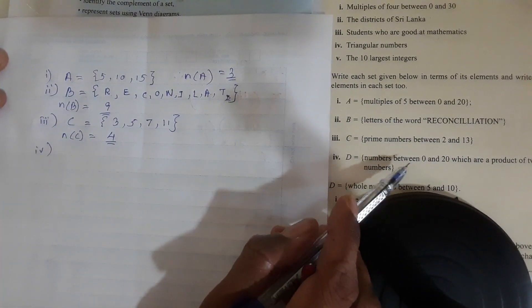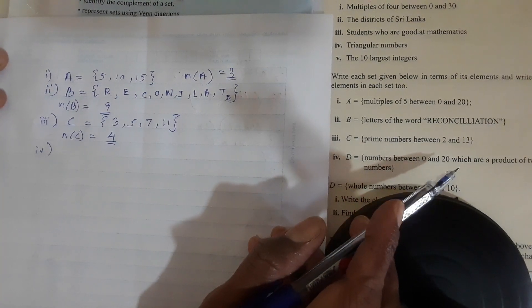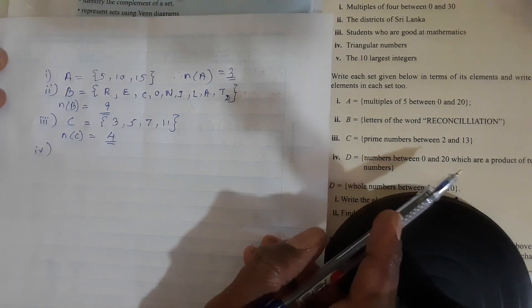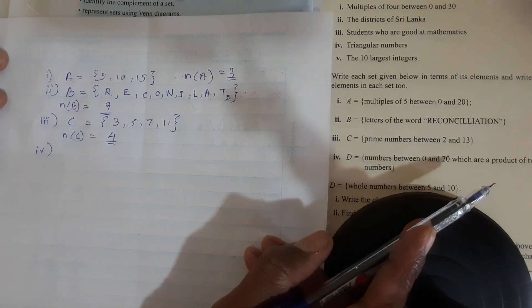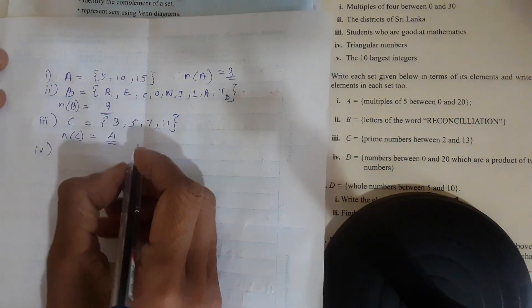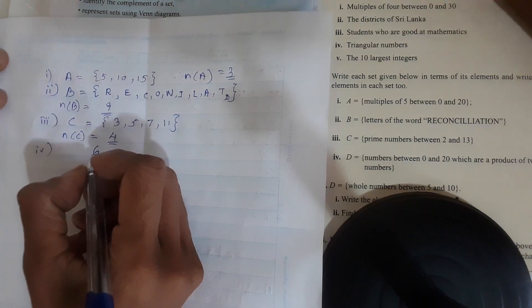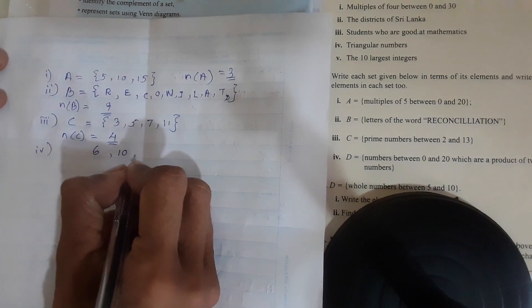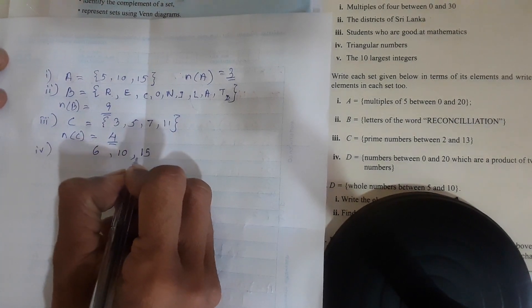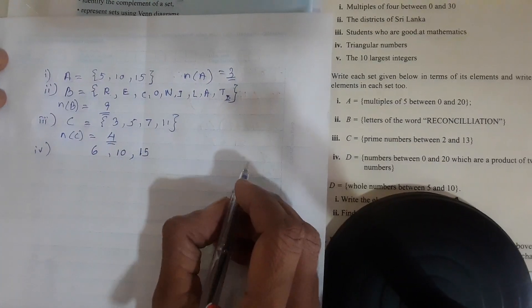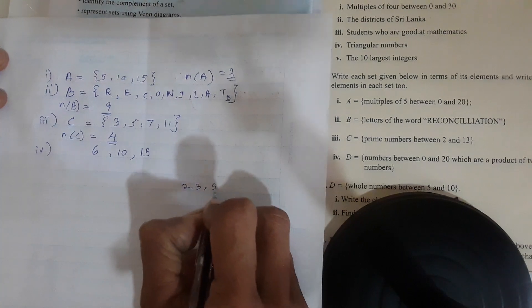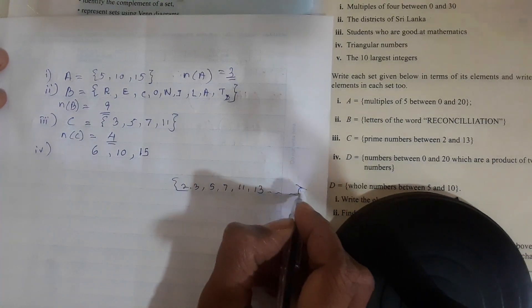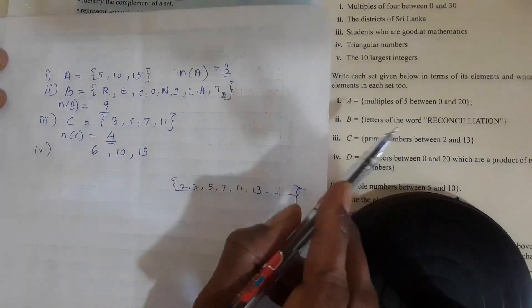Set D: numbers between 0 and 20 which are a product of 2 prime numbers. Product of 2 and 3 is 6. Product of 2 and 5 is 10. Product of 3 and 5 is 15. The prime numbers are 2, 3, 5, 7, 11, 13. Numbers between 0 and 20 which are a product of 2 prime numbers.